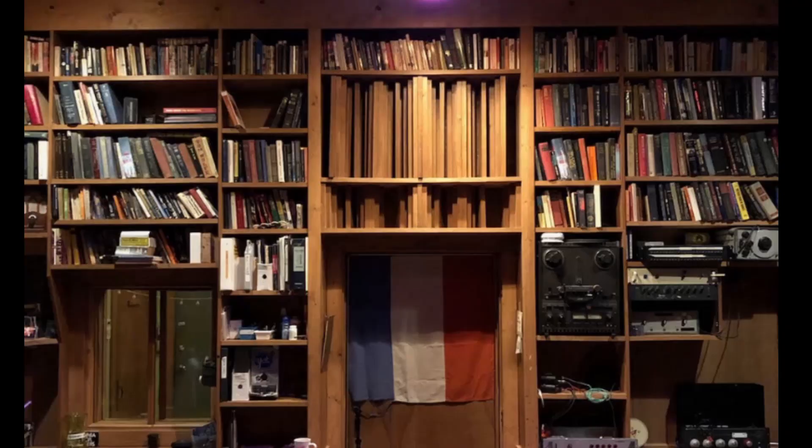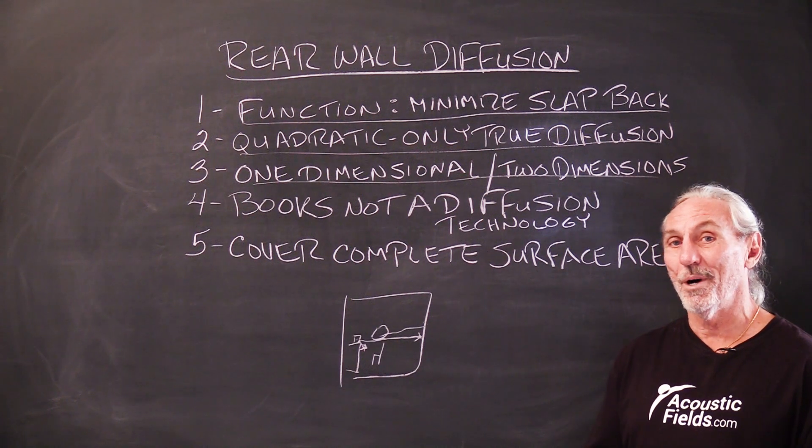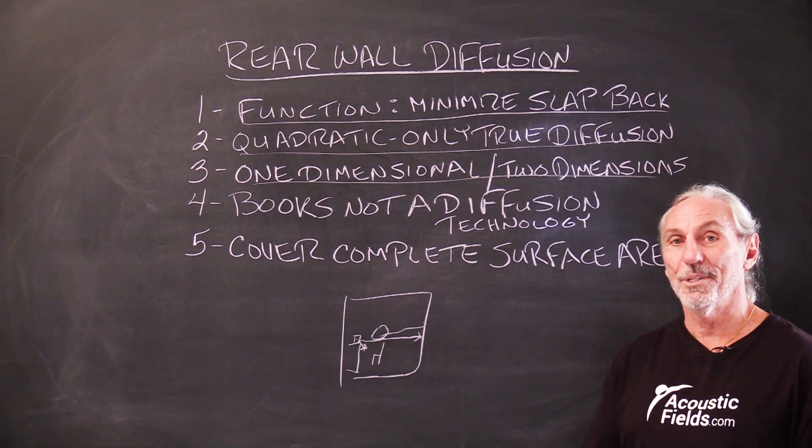And let's take a look at this picture, because this picture will show you some old school thinking. I know you've all heard that books are a great diffuser. You arrange them different depths and that's a diffuser. Well, not necessarily, and it's not a consistent approach. Books have different widths and different thicknesses.